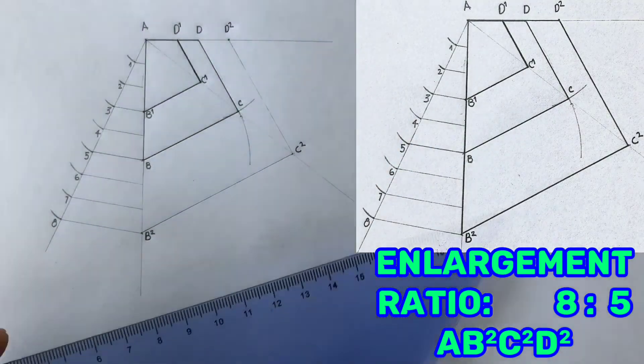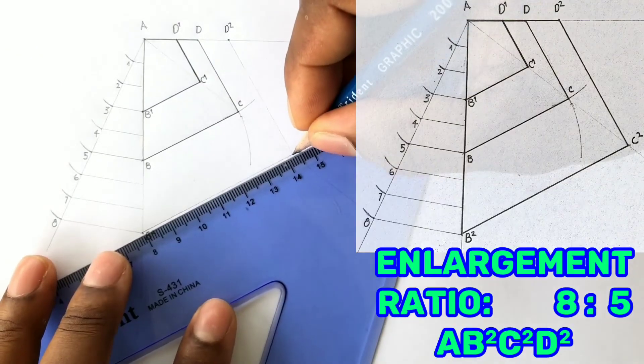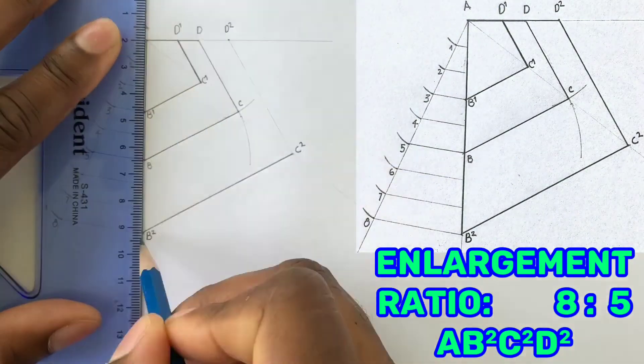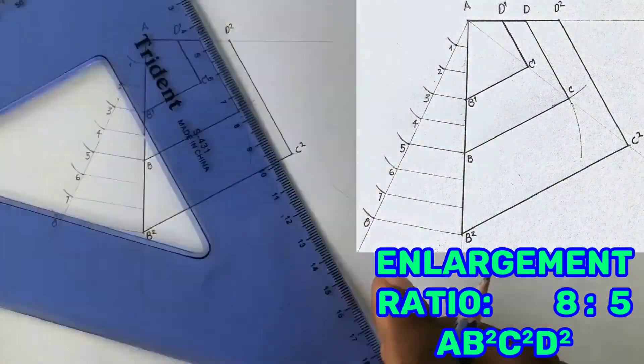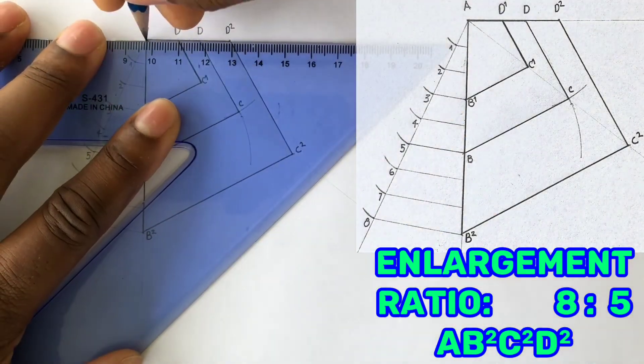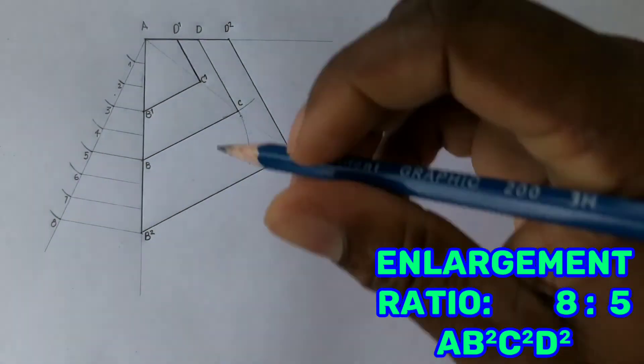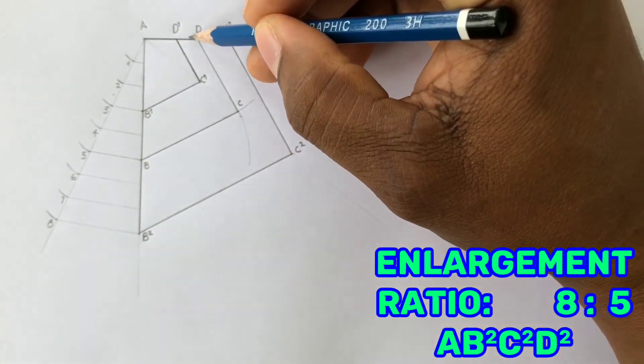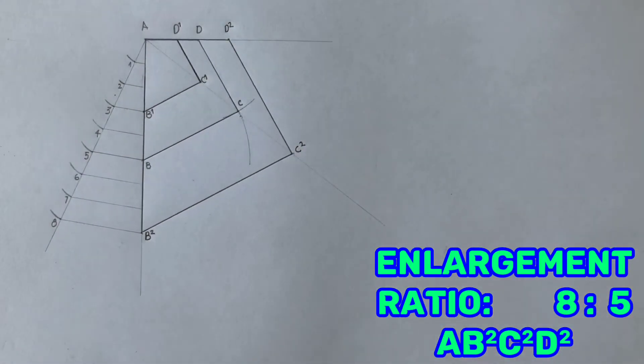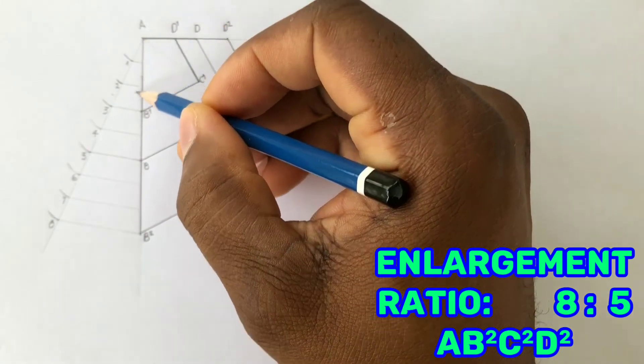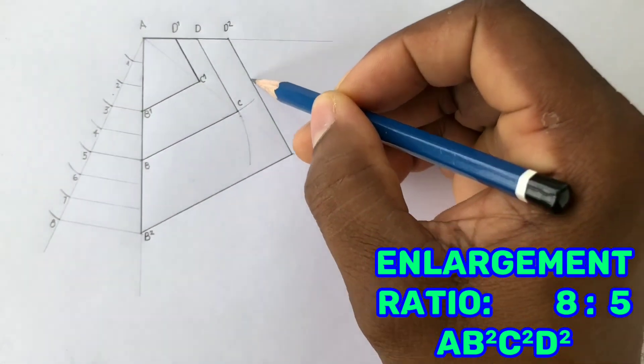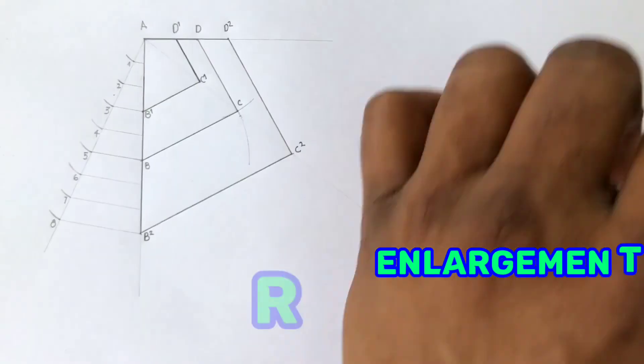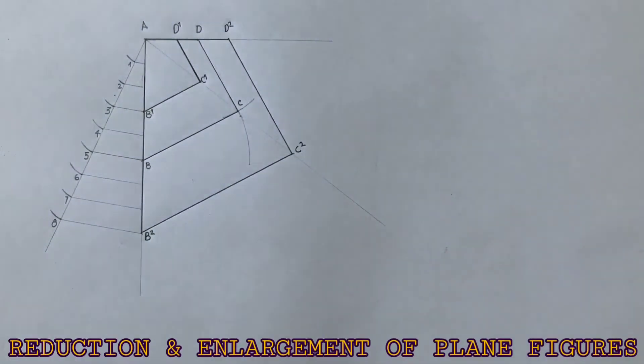Now outline your enlarged quadrilateral. Your given quadrilateral was ABCD. You have just enlarged it to get AB2C2D2. Border your paper and complete your title block.